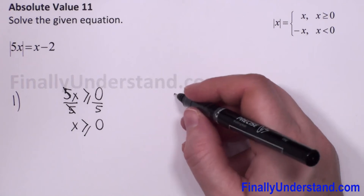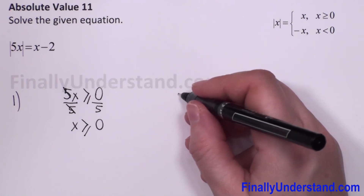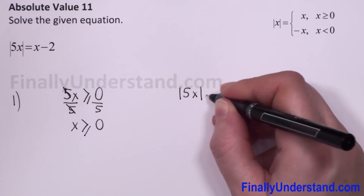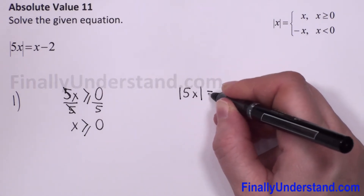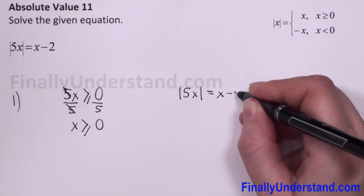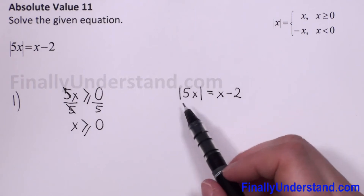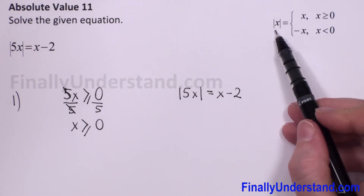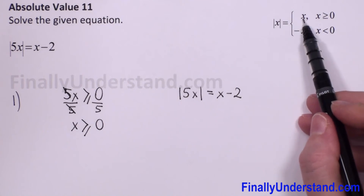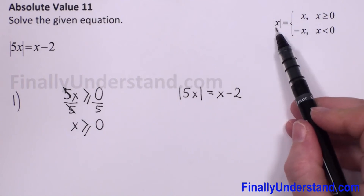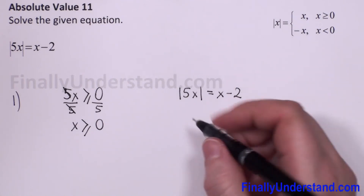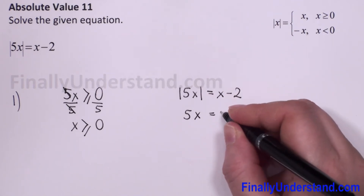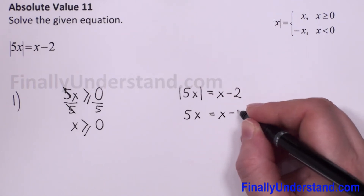So we can go to our equation. We have the absolute value of 5x equals x minus 2. In the first case, when we get rid of the absolute value bars, we just copy whatever is between these bars. So we have 5x equals x minus 2.